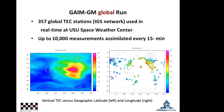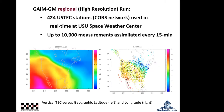In addition to the global GAME-GM run, we also ran a high-resolution regional GAME-GM run in real time. Approximately 10,000 slant TEC measurements were assimilated every 15 minutes. The left panel shows a snapshot of the vertical TEC specification and the right panel shows the corresponding data — red for high TEC and blue for low TEC.